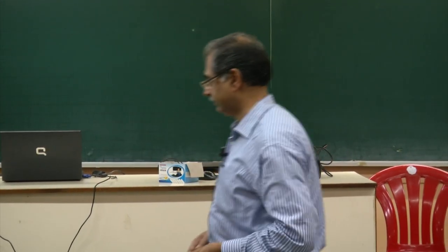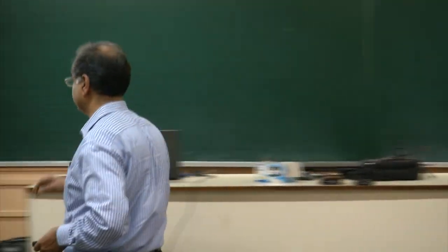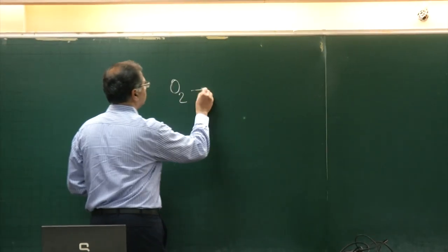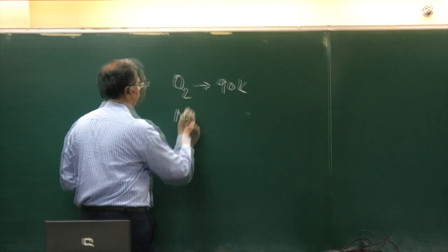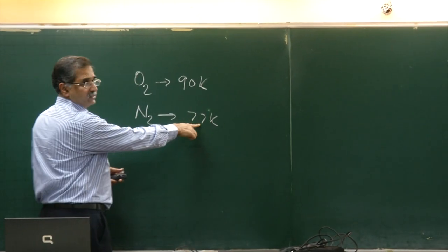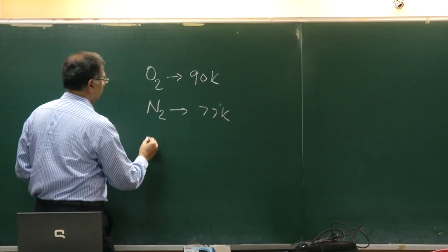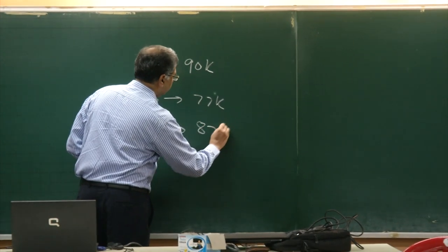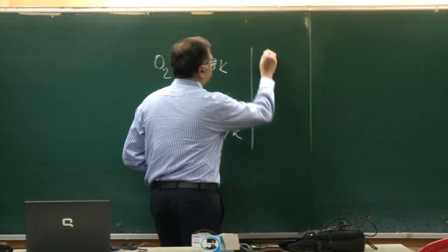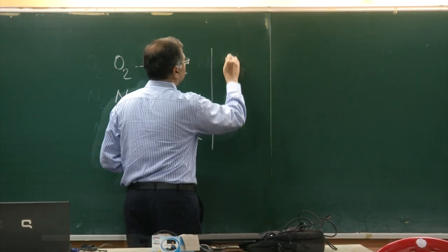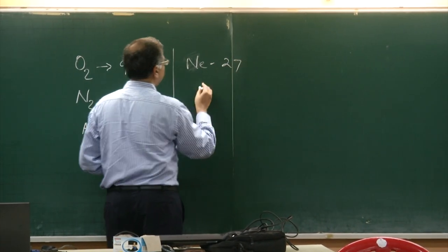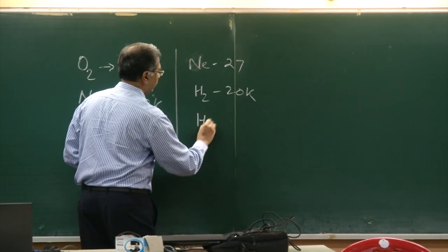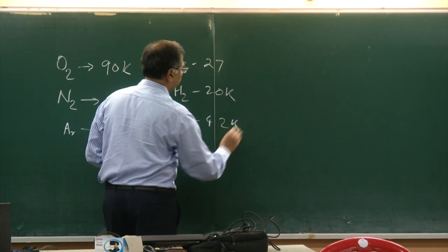Let me write these on the board so you have the data. The boiling point of oxygen is 90 Kelvin; nitrogen is 77 Kelvin (actually 77.4). Boiling point of argon is 87 Kelvin; neon is 27 Kelvin; hydrogen is 20 Kelvin; and helium is 4.2 Kelvin.